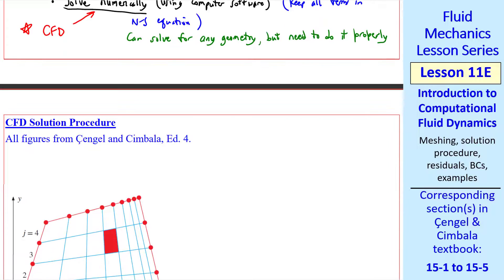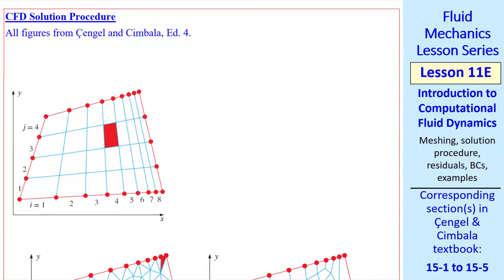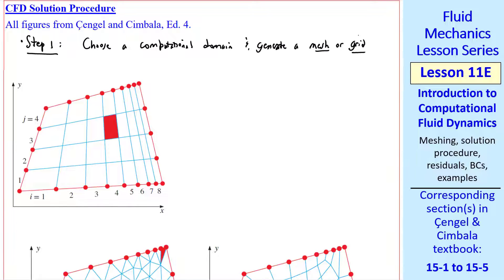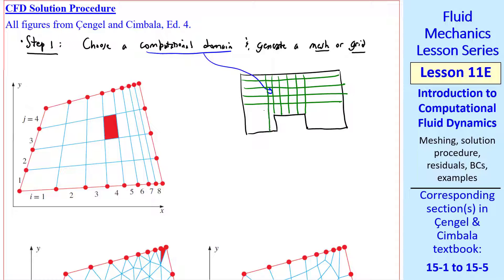Now I'll show you the general procedure for CFD solutions. The procedure is similar to what we did for analytical solutions, but there are some differences. Step one is to choose a computational domain and generate a mesh, also called a grid. As a simple example, suppose you have flow over a rectangular block. Your computational domain would be this region, and you split the domain into cells. These do not have to be the same size, but they fill up your entire domain. An actual mesh that you generate for CFD would have thousands of cells.